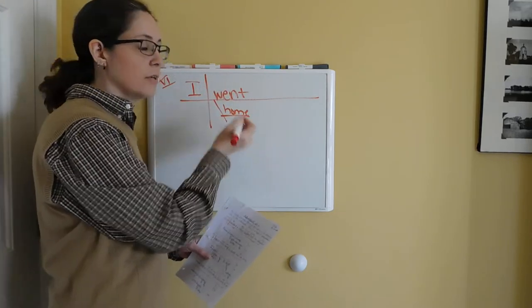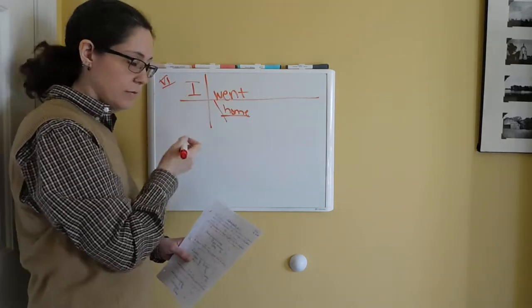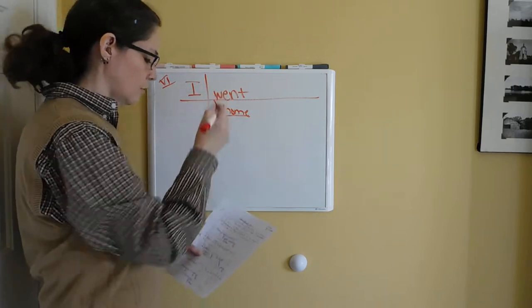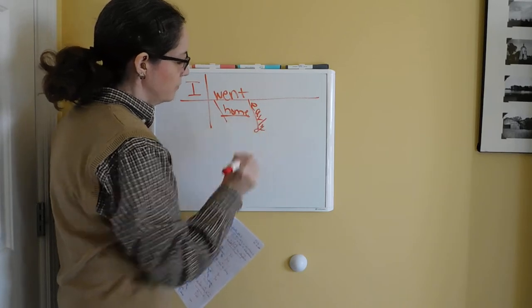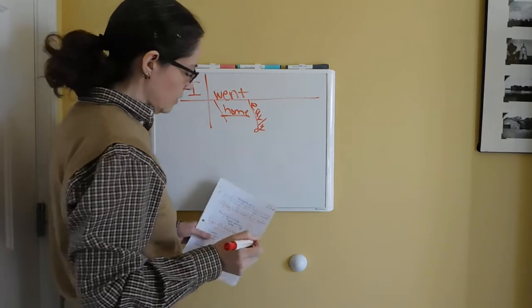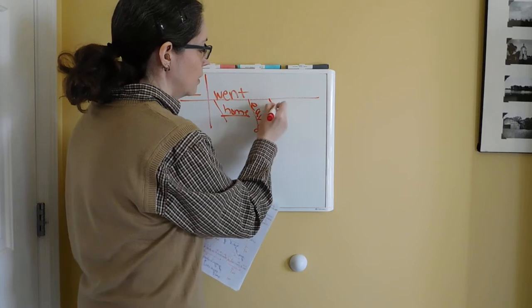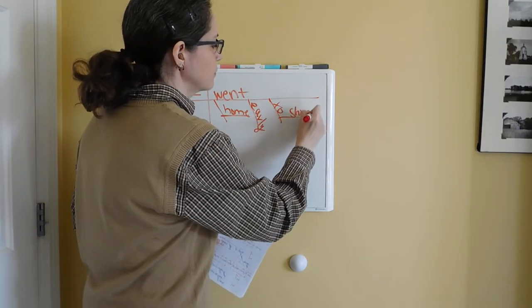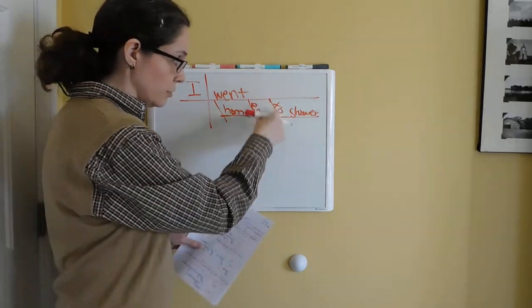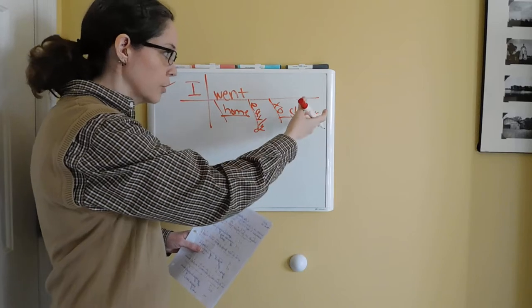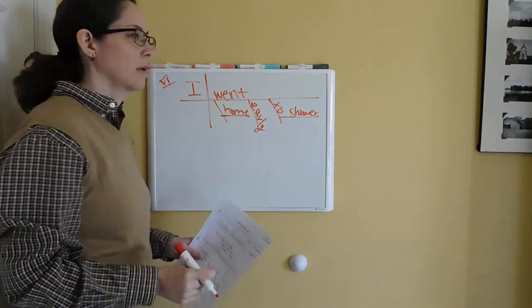It is the adjectives, prepositions, and determiners that go on the slanted lines. So: 'I went' — where? — 'home.' When? 'Early.' Early is an adverb, so it goes on a slanted line. Then the why — here comes your infinitive phrase: 'to shower.' The infinitive form is diagrammed just like a preposition, so 'to' goes on the slanted line and 'shower,' your verb, has to be horizontal because it's a verb and must be horizontal.